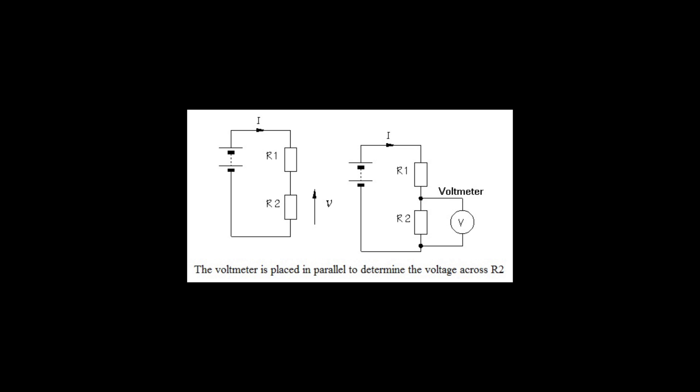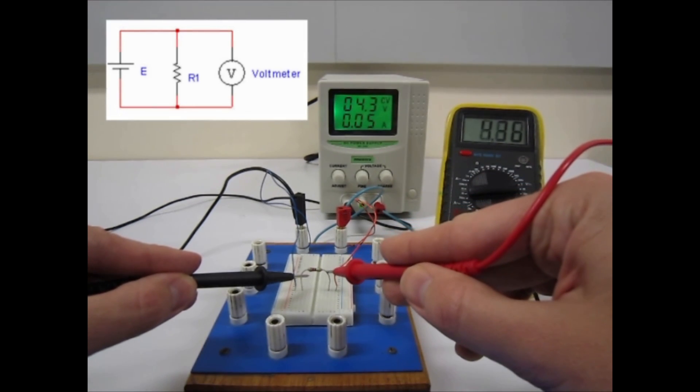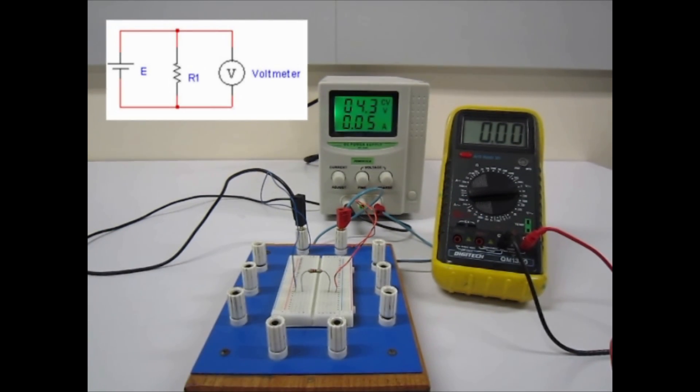To measure the voltage the multimeter must act as a voltmeter. When measuring voltage we place the voltmeter in parallel with the element we are measuring. We do this because we know that parallel connected circuit elements have the same voltage across their terminals.